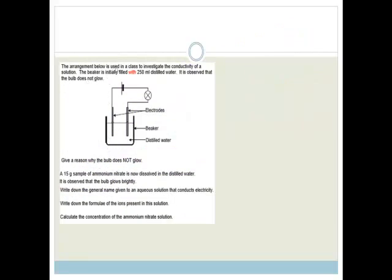The arrangement below is used in a glass to investigate the conductivity of a solution. The beaker is filled with 250 ml of distilled water. It is observed that the bulb does not glow. That's the bulb. So if we look here, what have we got? We've got a battery, we've got two electrodes, we've got some distilled water, and we've got a completed circuit with a bulb.